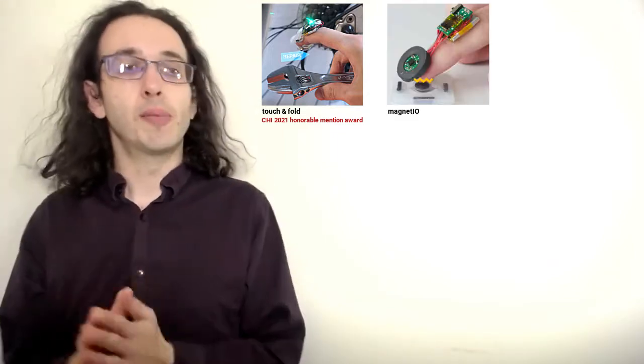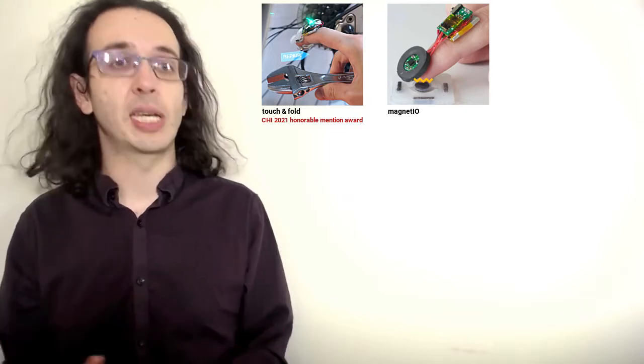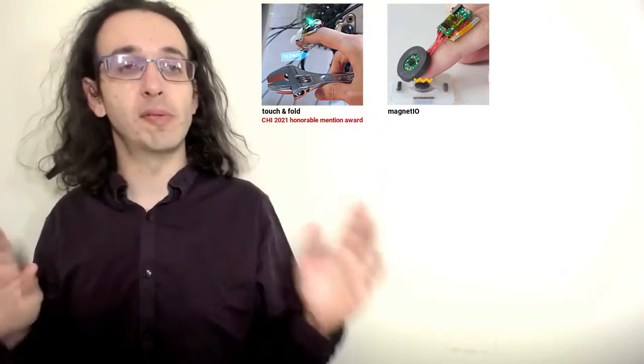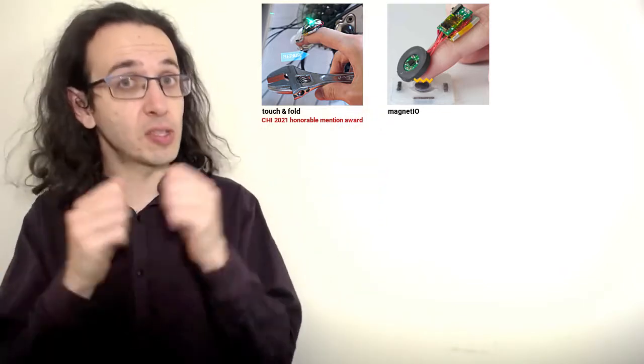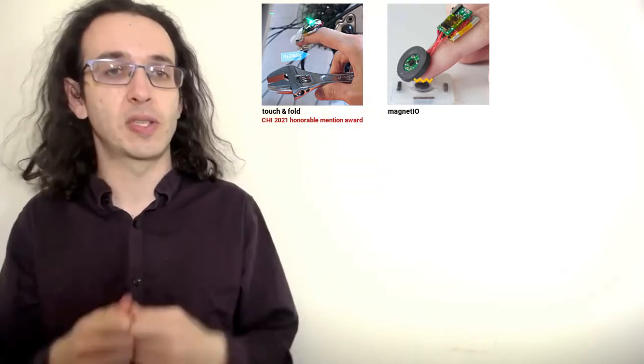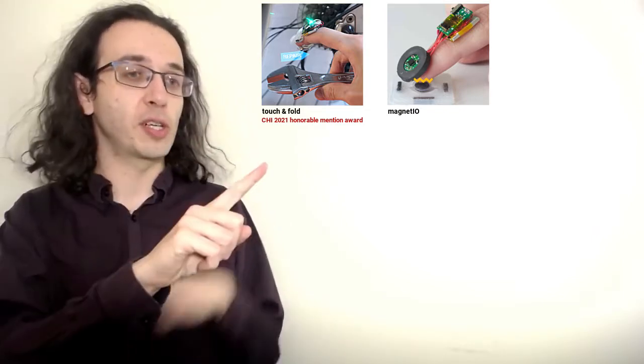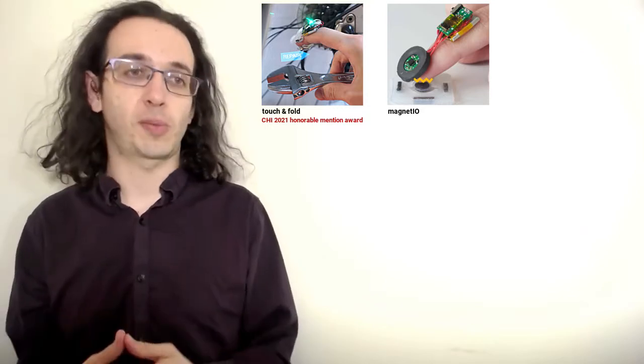The second one, presented by my student Alex Mazursky, is called MagnetIO and demonstrates a haptic actuator that can be placed everywhere in the environment because it's passive and it's made from soft and stretchable magnets. It becomes alive and gives haptic feedback when the user's finger, which is wearing an electromagnetic coil, comes in contact with it.